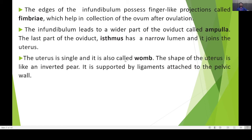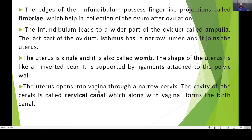The uterus is single and is also called the womb. Its shape is like an inverted pear and it is supported by ligaments attached to the pelvic wall. The uterus opens into the vagina through the narrow cervix. The cavity of the cervix is called the cervical canal, which along with the vagina forms the birth canal during delivery.